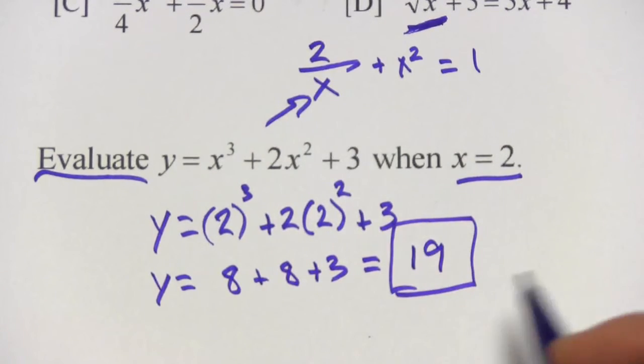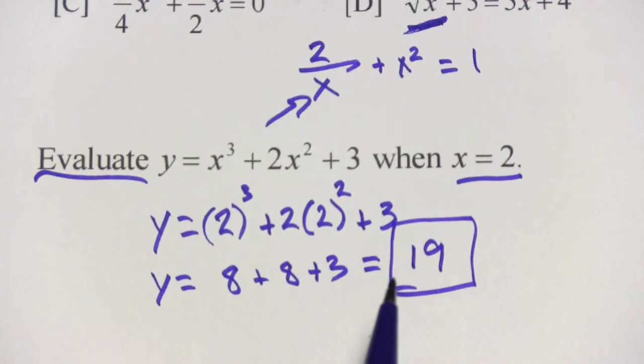So when x equals 2, y equals 19. That's a little bit of work with polynomial equations.